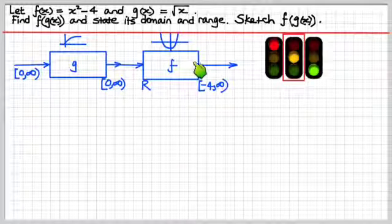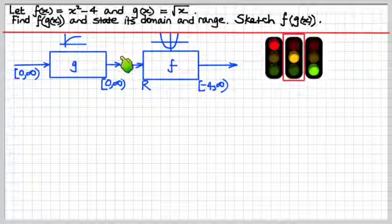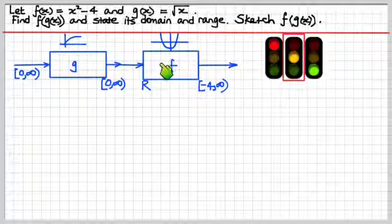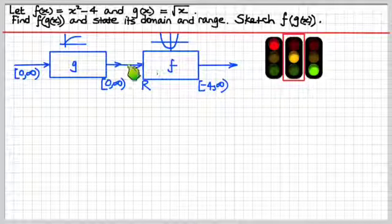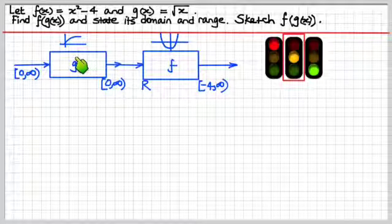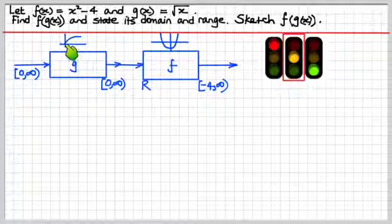But the output of the first process was required as the input of the second process. That's what these things are all about. So, you've got to have a look here, and you've got to see, draw yourself a little picture like I do if necessary, and draw a little graph of what the process does to the input variable.